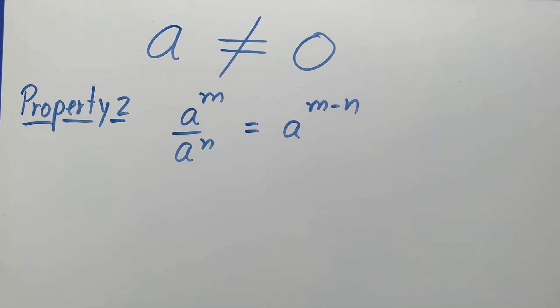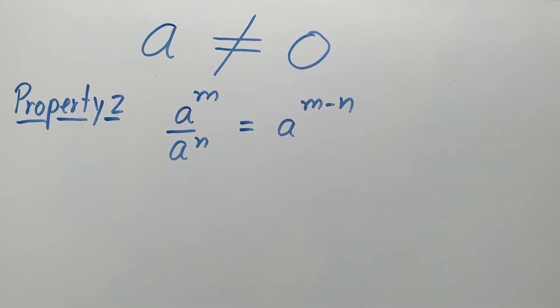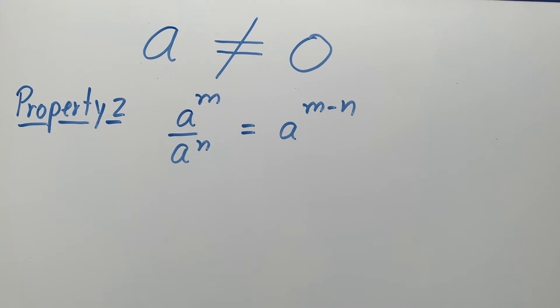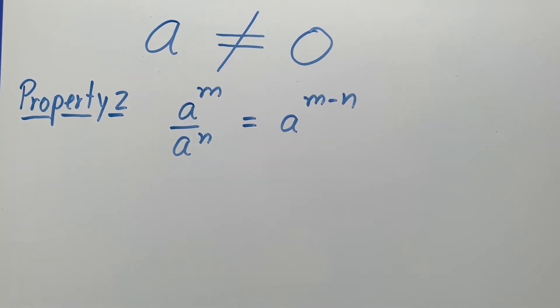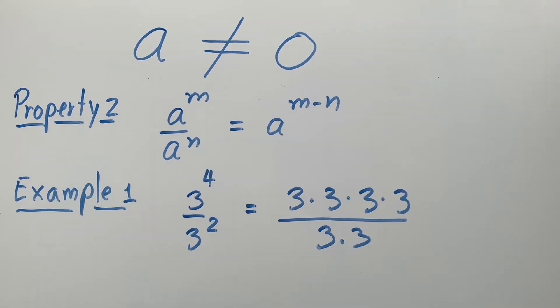Property 2: when dividing 2 powers whose bases are the same, subtract the denominator's power from the numerator's power. Example 1: